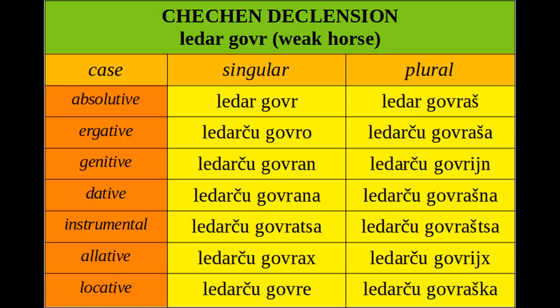The adjective only changes in the non-absolutive (oblique) cases, where it gains -chu at the end, whether in the singular or the plural. So adjective declension is very regular — that is essentially the rule for every adjective in Chechen. For the noun, things are a little more complicated: the case endings tend to be roughly those shown on the chart, but there are variations and irregularities.